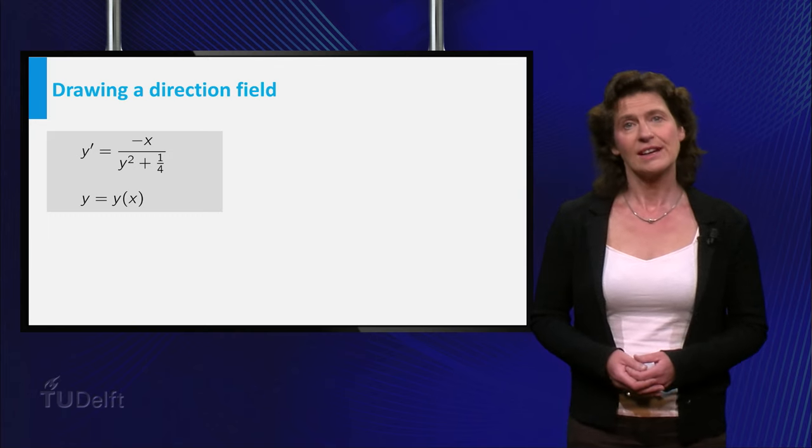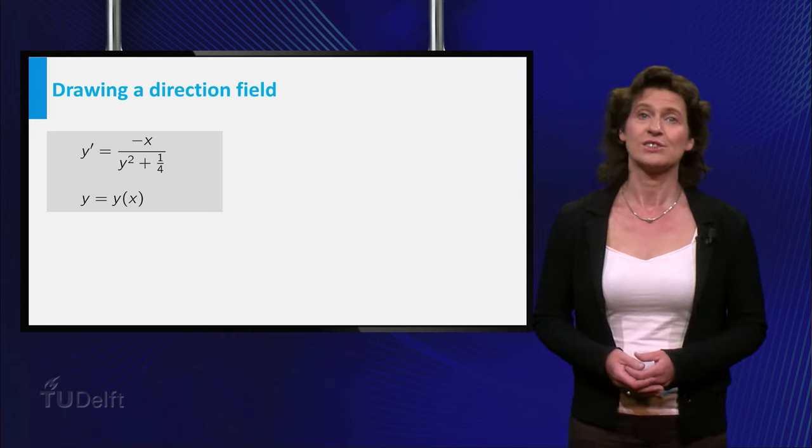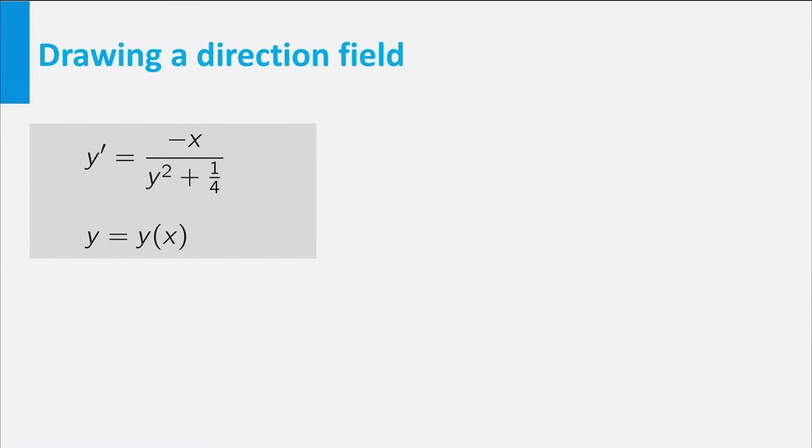Let's find the direction field for the differential equation you see here. Now suppose the graph of a solution of this equation passes through the point (1,1). This means of course that for x equal to 1, the corresponding value of y of the solution is equal to 1.